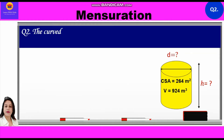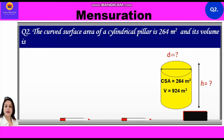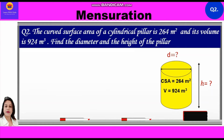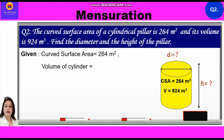Now let's take up question number two. The curved surface area of a cylindrical pillar is 264 m² and its volume is 924 m³. Find the diameter and the height of the pillar. Given: curved surface area = 264 m², volume = 924 m³. We need to find the diameter and height.